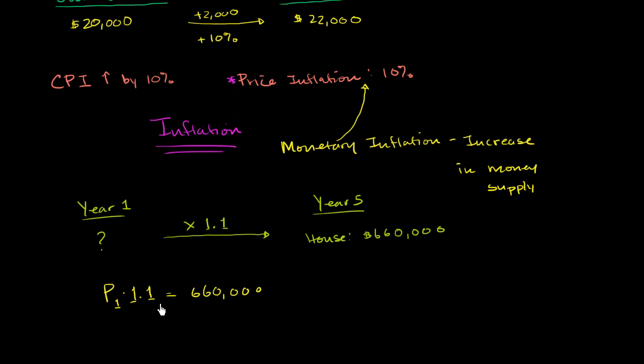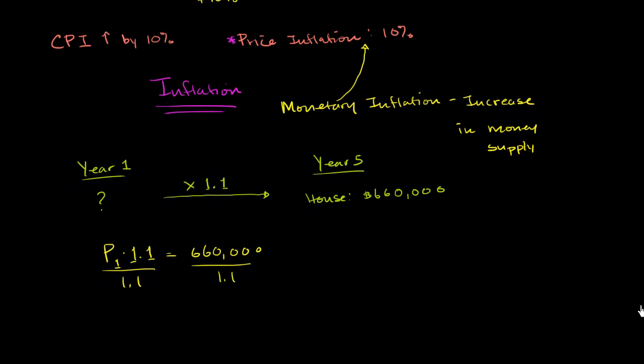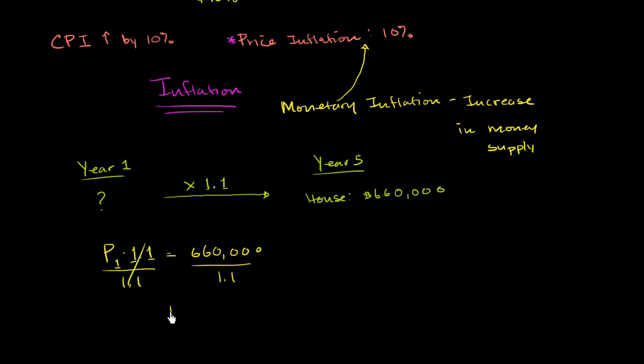Now, this is simple algebra right here. You can divide both sides by 1.1, and we get these cancel out. You get the price of that house in year one. 66 divided by 11 would be 6. Now, you could work it out with a calculator, if you don't feel comfortable with what I'm about to do, but this would give you $600,000 if you work this math right out here. And you could figure out the decimals. I think you get the general idea here. You can use your calculator. I kind of did this one in my head.